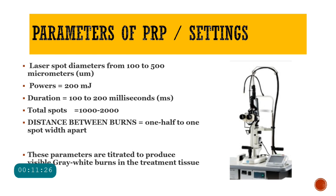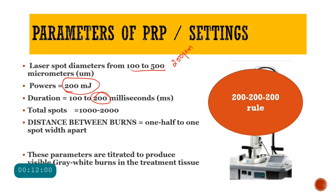PRP machine parameters follow the 200-200-200 rule: spot diameter approximately 200 micrometers, power approximately 200 millijoules, and duration approximately 200 milliseconds. Add a zero for the number of spots — approximately 1000 to 2000 spots in total — with a spacing of one-half to one spot width between burns.